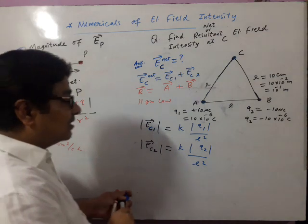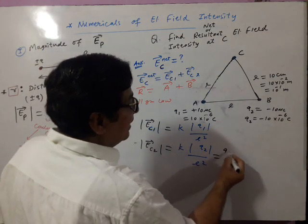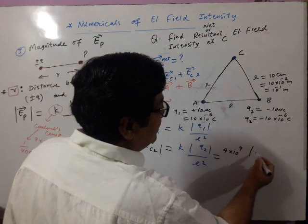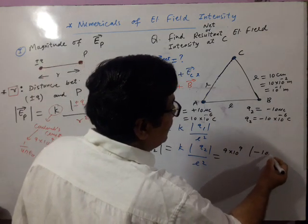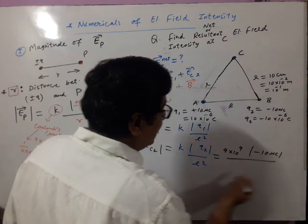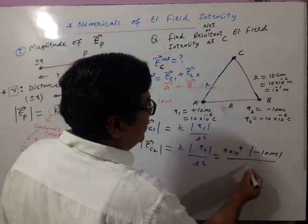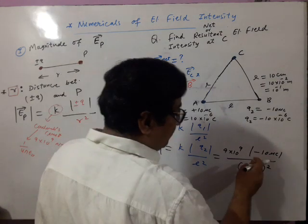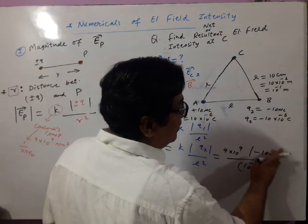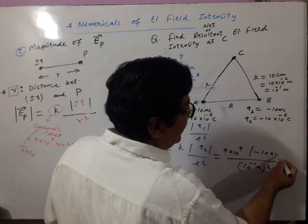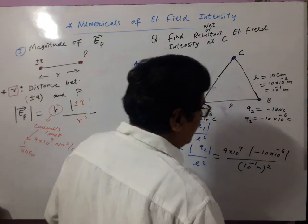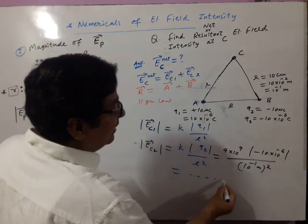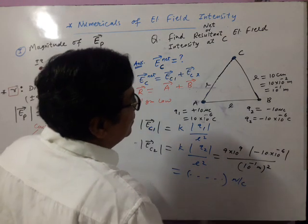Now see one simplification. K is 9 × 10⁹, Coulomb's constant, times mod of Q2. Q2 is minus, so write minus 10 micro coulombs, divided by distance square — that is (10 × 10⁻¹ m) whole square. Since you are putting all values in SI, put it as mod of minus 10 × 10⁻⁶. You can simplify, and units will be Newton per coulomb. You know the formula F = QE, so E = F/Q, and units of electric field are Newton per coulomb.